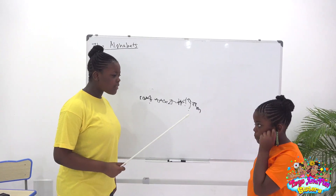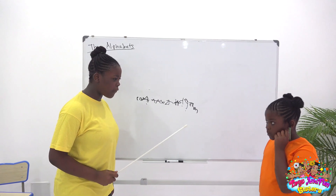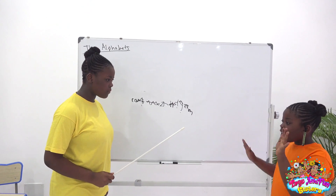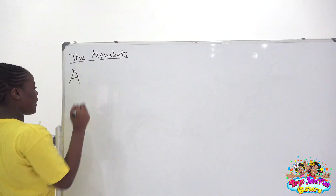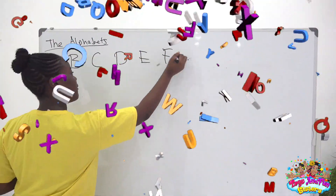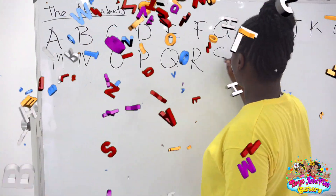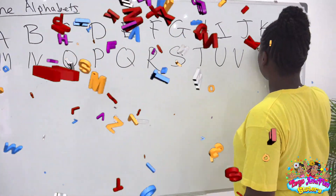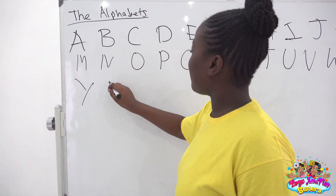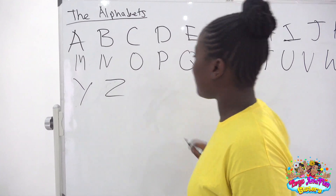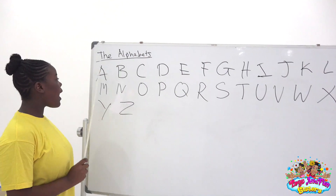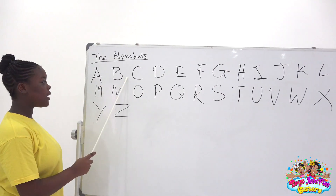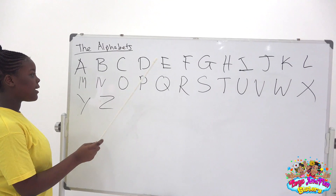Well, now you're going to sit down and learn the proper English alphabet. Okay. Y and Z. Now, repeat after me. A. A. B. B. Z. D. I can't wait.